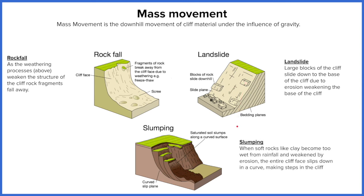Finally, we have slumping, which happens with soft rock like clays. When water gets in, or when erosion occurs at the base of the cliff, the entire cliff face moves down. Unlike rock falls or landslides, the entire side of the cliff slips away in a rotation and curve, spreading out along the beach — this is called rotational slip.